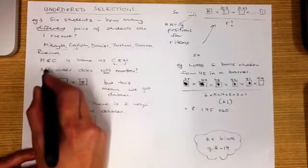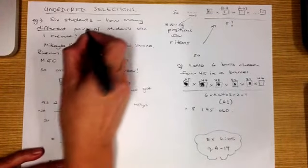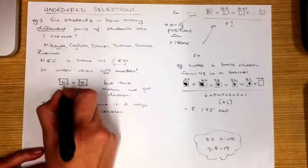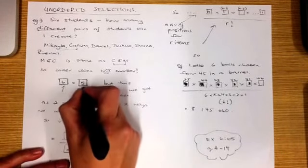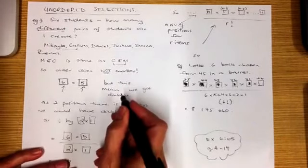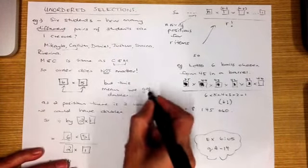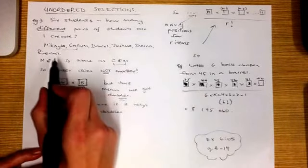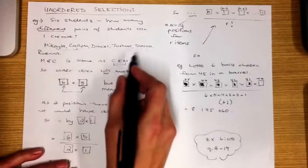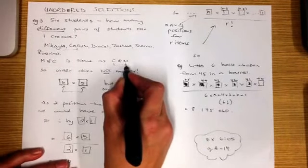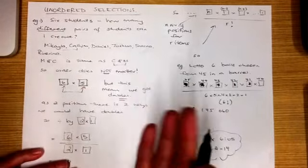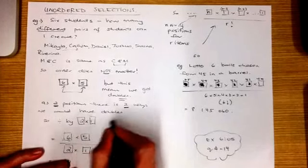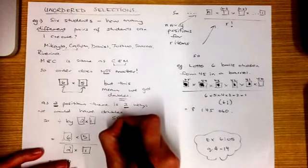So if I look at this example — six students choosing a pair — I have two positions or two boxes: six people in my first position and five people in my second position. But because we have pairs, we're going to end up with doubles. The reason we're going to get double the amount of combinations is because we've got pairs — one position is the same as the second position, and there are two positions, so we know they're going to appear twice. There are two ways that we could have the same combination, or a double.